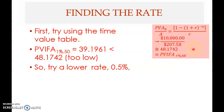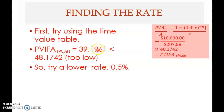If you look at Table A3 in your appendix and look at row number 60 and look across the row to find this value — you find that the lowest r is one percent. But 60 periods is not available in the table; you only have 50 periods. At one percent and 50 periods, the highest value is 39.1961, which is less than 48.1742 that you want.